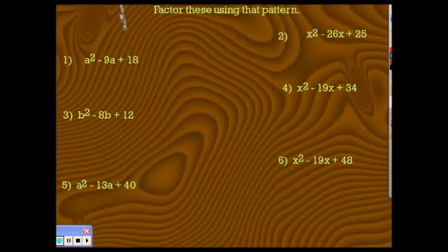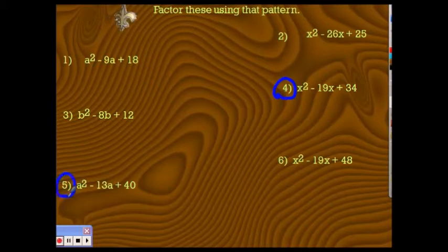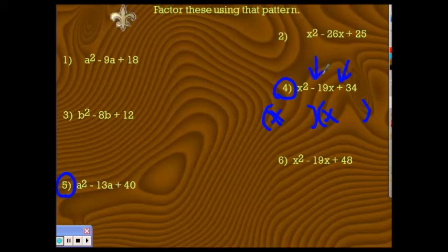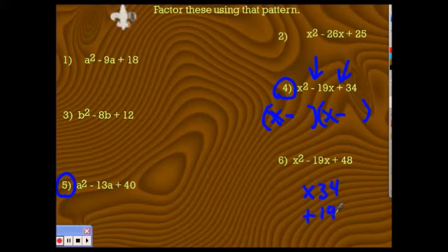Here are some examples. Let's look at number 4. This plus sign here tells me the two signs are the same — so it's either plus-plus or minus-minus. Then I look at the minus sign in the middle, which tells me it's going to be minus-minus. I'm looking for two numbers that multiply to give me 34 and add up to 19 — that sounds like 17 and 2. In either order, that is my factored answer.